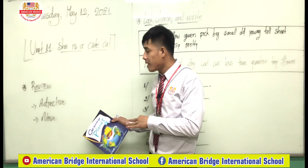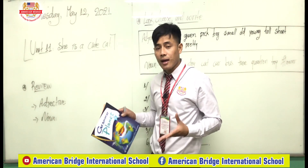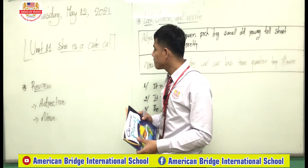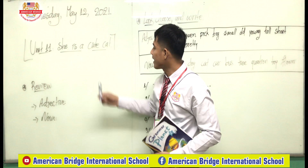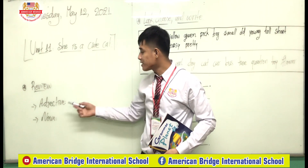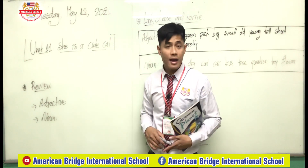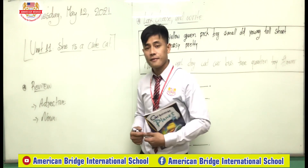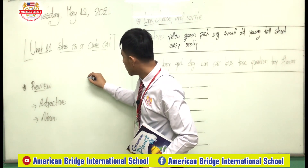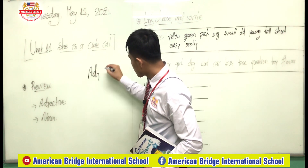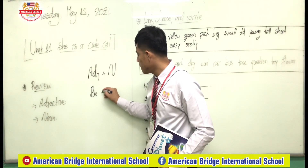Before we get started doing this exercise, let's review adjectives and nouns first — how do we use the adjective in sentences and where the location of adjectives is. Adjectives are used to describe nouns. The location of an adjective is that it always stays before the noun.